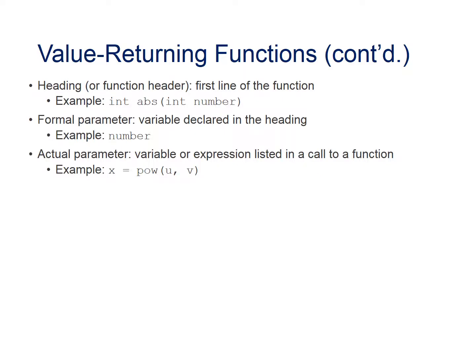The heading, or function header, is the first line of the function — for example, integer abs, where number is an integer passed to the abs function. Formal parameters are variables declared in the heading, for example, number. An actual parameter is a variable or expression listed in a call to a function — for example, x equals the power of u and v, where the result is stored in x.